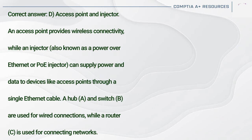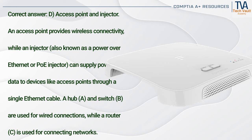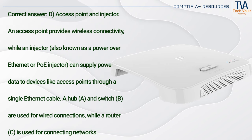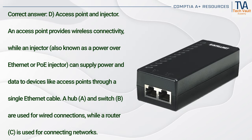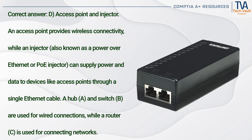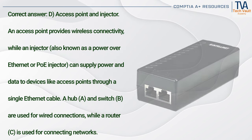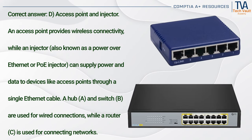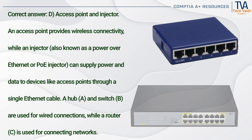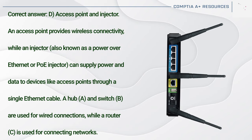Correct answer: D. Access point and injector. An access point provides wireless connectivity, while an injector — also known as a Power over Ethernet (PoE) injector — can supply power and data to devices like access points through a single Ethernet cable. A hub (A) and switch (B) are used for wired connections, while a router (C) is used for connecting networks.